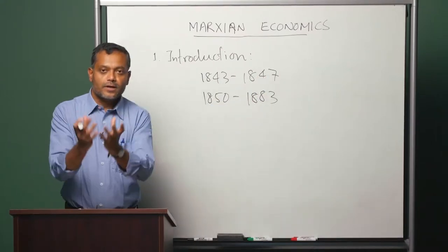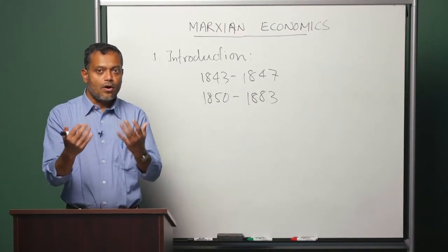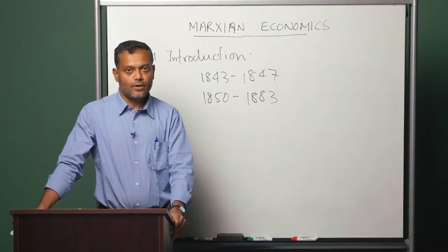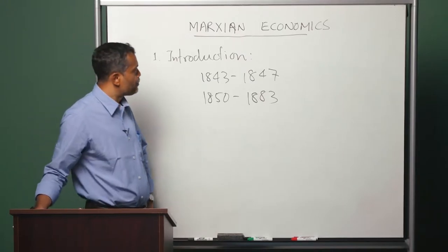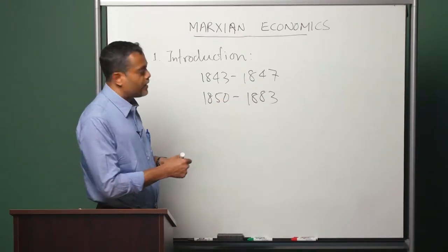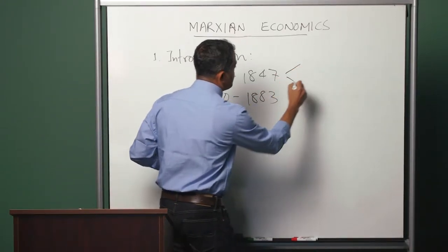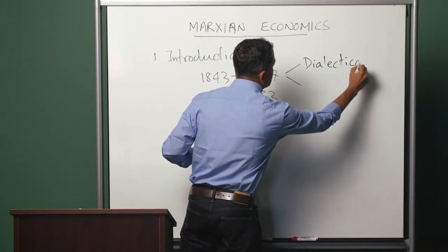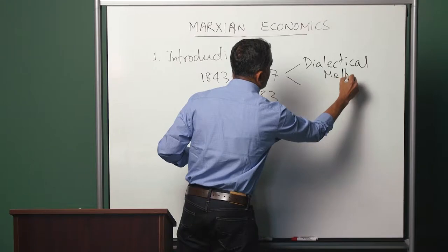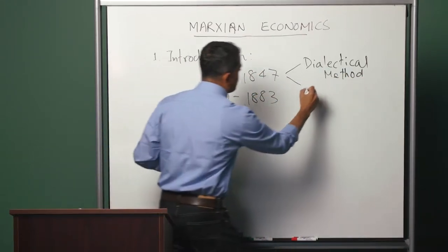What emerged from the critical synthesis of these three strands of European thought later came to be known as Marxism. Two key ideas that emerged during this phase of his study are the dialectical method and historical materialism.